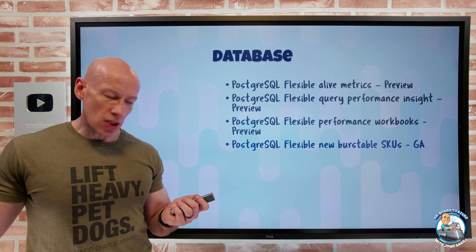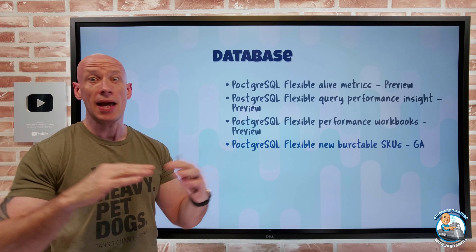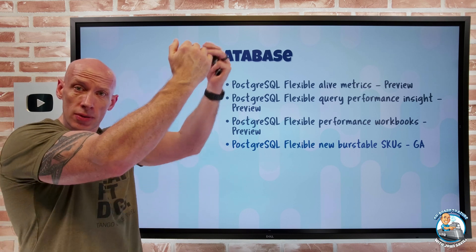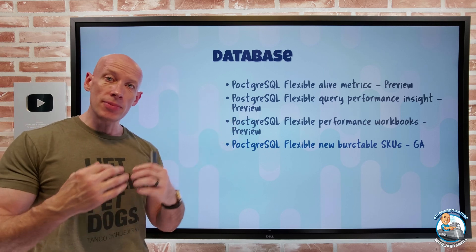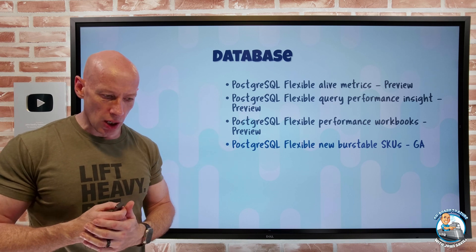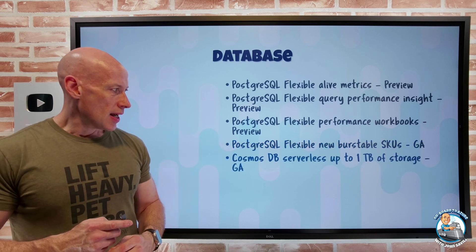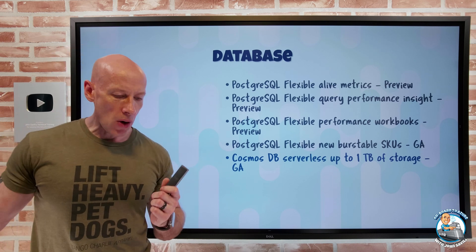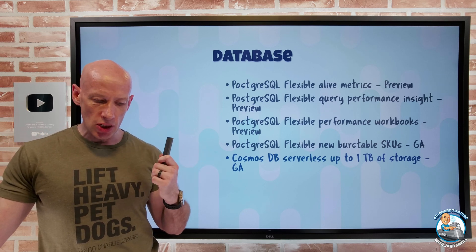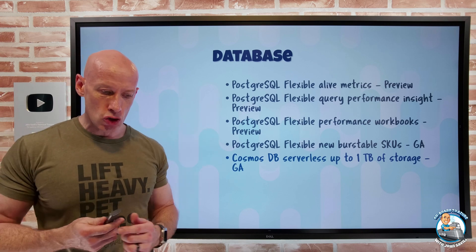New burstable SKUs have gone GA. Burstable SKUs give you a provisioned CPU percentage — maybe 10% — so you pay less. If you run below that provisioned amount you accrue CPU credit, and during sporadic busy periods you can burst up to 100% CPU. It's much more cost-efficient for bursty workloads. The B4, B8, B12, B16, and B20 can all now be used with PostgreSQL Flexible. Also, Cosmos DB serverless now supports up to one terabyte of storage — you only pay for request units and storage consumed. PostgreSQL Flexible is also now available in the Australia Central region.